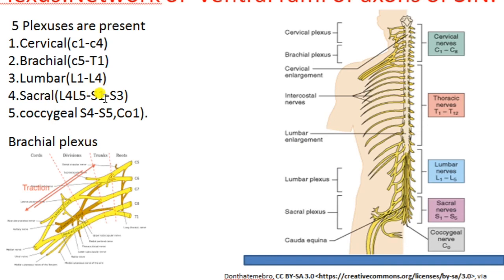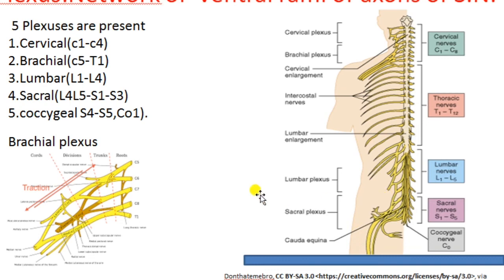The sacral plexus is formed by parts of the fourth lumbar spinal nerve, the fifth lumbar spinal nerve, and sacral spinal nerves S1, S2, and S3. The sacral plexus supplies fibers to the pelvis region, buttocks region, and the feet region — so the lower limbs are innervated by these fibers.